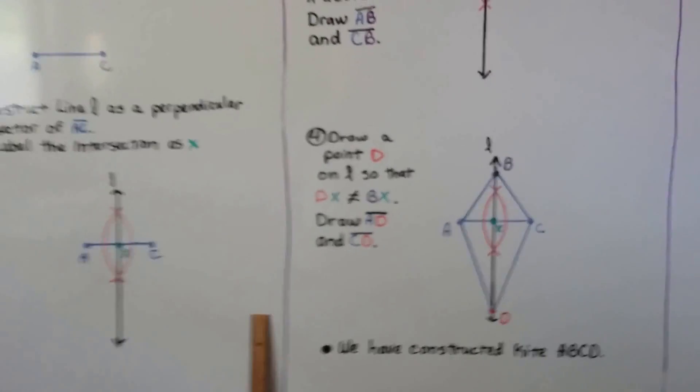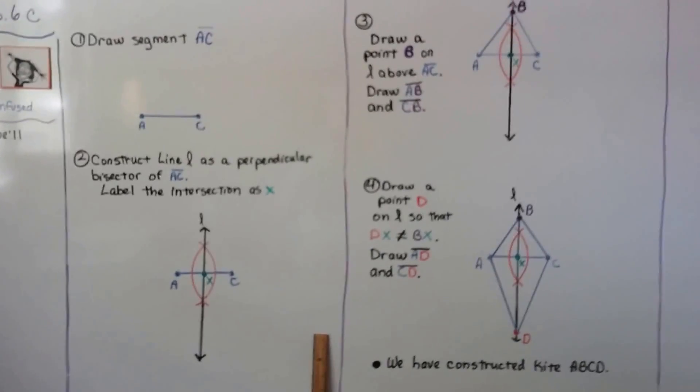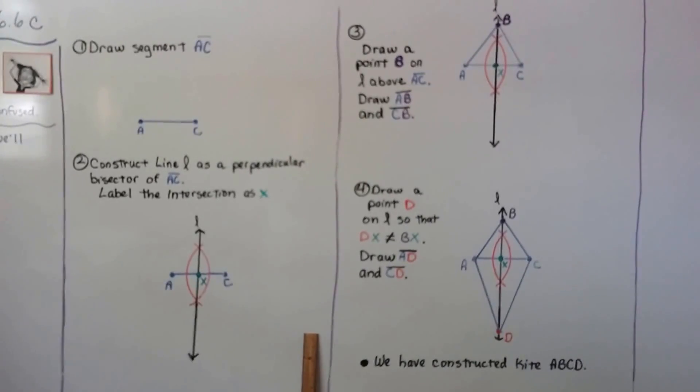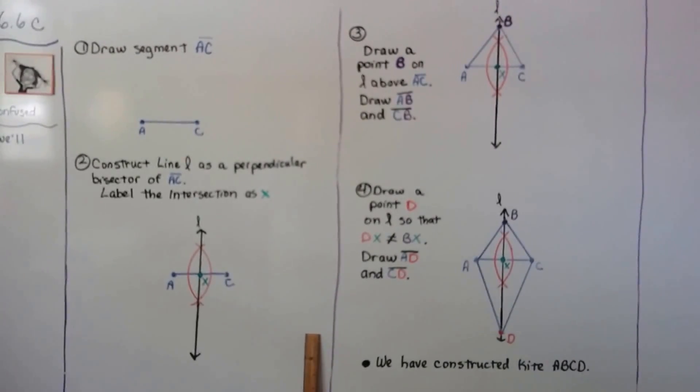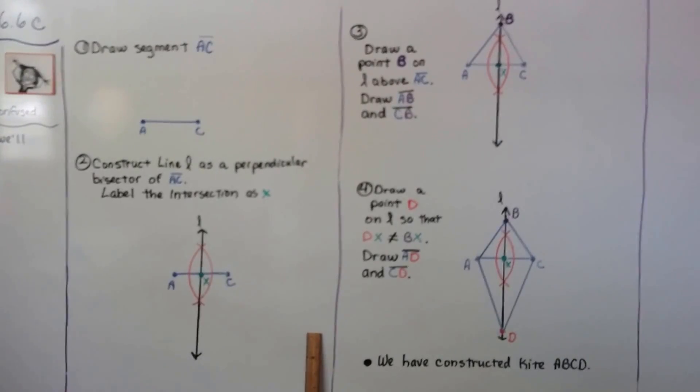So I don't think that was too difficult. The trick behind this is just knowing how to do the perpendicular bisector and you should be fine. Put a couple points on that line and connect them and you've got your kite.